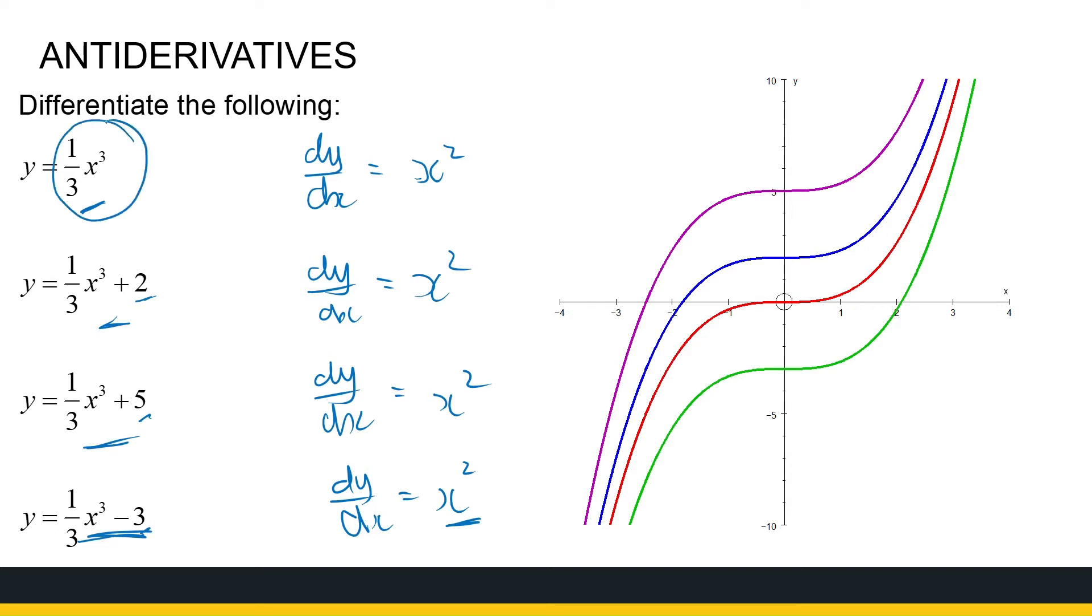They all differ by a constant. Now we call this function here an antiderivative of x squared. What is the function that I have to derive to get to x squared? Now you will notice that we've got more than one option. So the antiderivative is not unique.